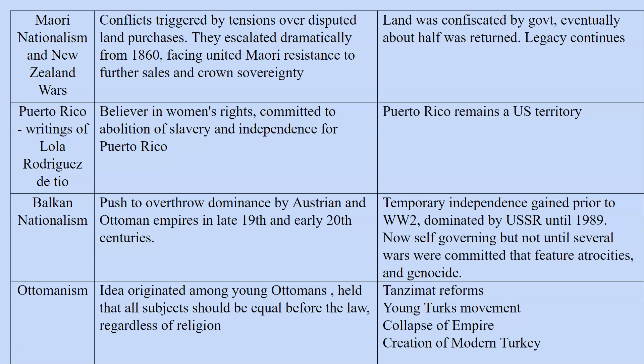Balkan nationalism in southeastern Europe was a push to overthrow the dominance of the Austrians and the Ottomans. Most countries gained temporary independence prior to World War II, but afterward they were dominated by the USSR until 1989. They are now self-governing but not without significant problems — there were several wars involving atrocities, even reaching the level of genocide in Bosnia.